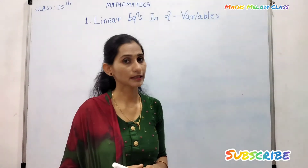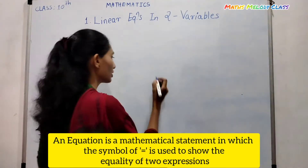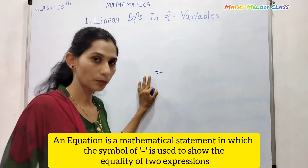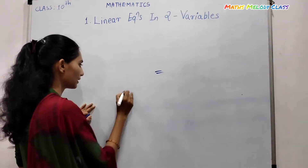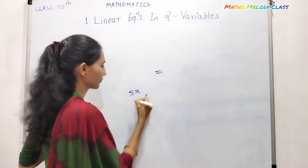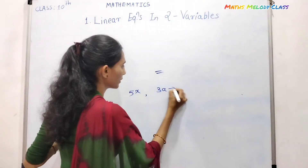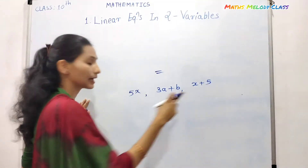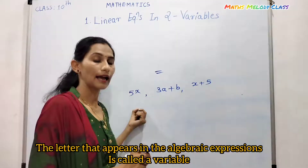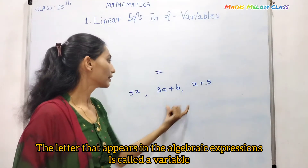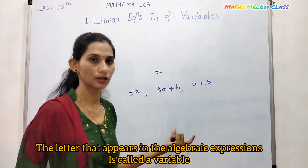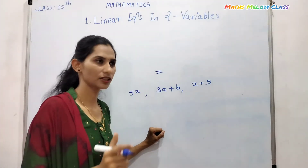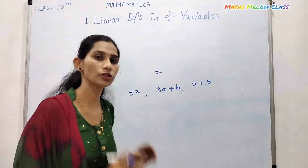An equation is a mathematical statement in which a symbol of equal to is used to show the equality of two expressions. Consider the expressions 5x, 3a plus b, x plus 5. These are algebraic expressions and the letters appearing in these algebraic expressions are called variables. The term variable means something that can change or vary — it is a value that can change.